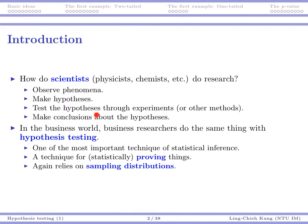And then we would test the hypotheses through some experiments. Physicists would do some experiments and try to confirm or reject those hypotheses, and then finally make some conclusions. Even though we are in the business world, still when we want to do some research, we typically follow the same way. For statistics, there is one thing called hypothesis testing that is most likely repeating what those scientists do. It's one of the most important techniques of statistical inference.